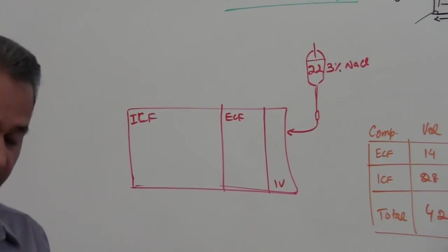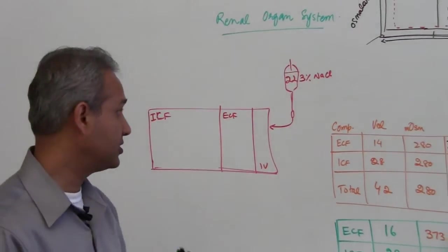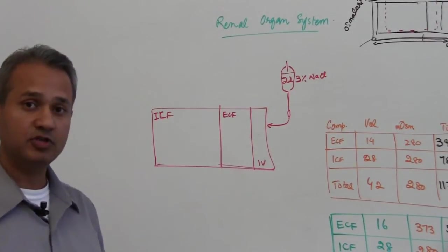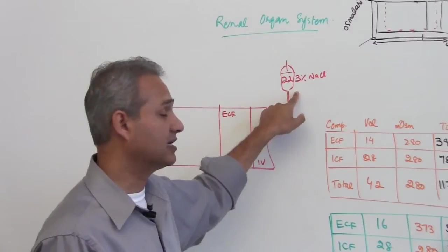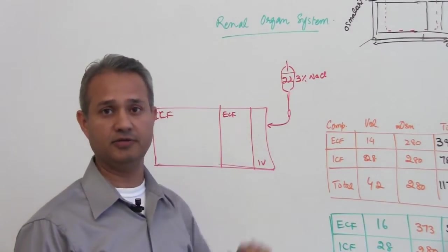And we will be adding 2 liters of it. So the setup is that we have a healthy person in which we are going to infuse 2 liters of 3 percent sodium chloride solution.